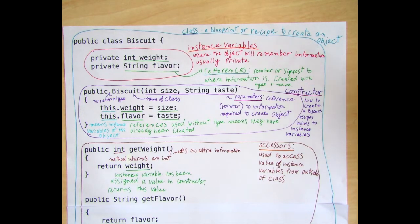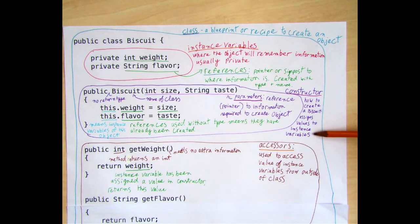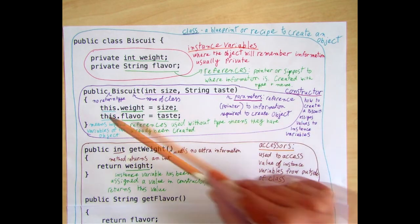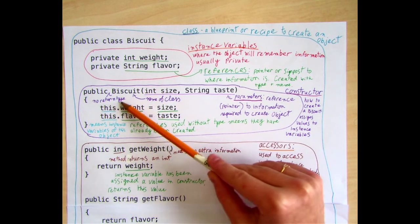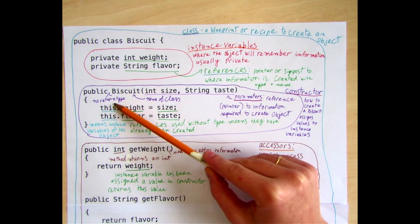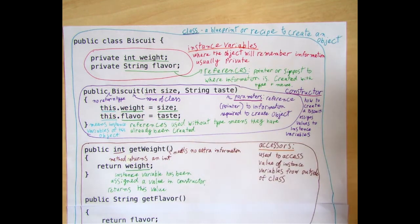The next thing we put is the constructor. This is telling the computer how to create a biscuit when it's asked to create a biscuit. The constructor generally assigns values to the instance variables. You can see that it says simply 'public biscuit', which is rather unusual, because most methods will have to put what they return between 'public' and the name of the method. But because it's a constructor, you don't have to do that — it's one of the things that makes a constructor special.